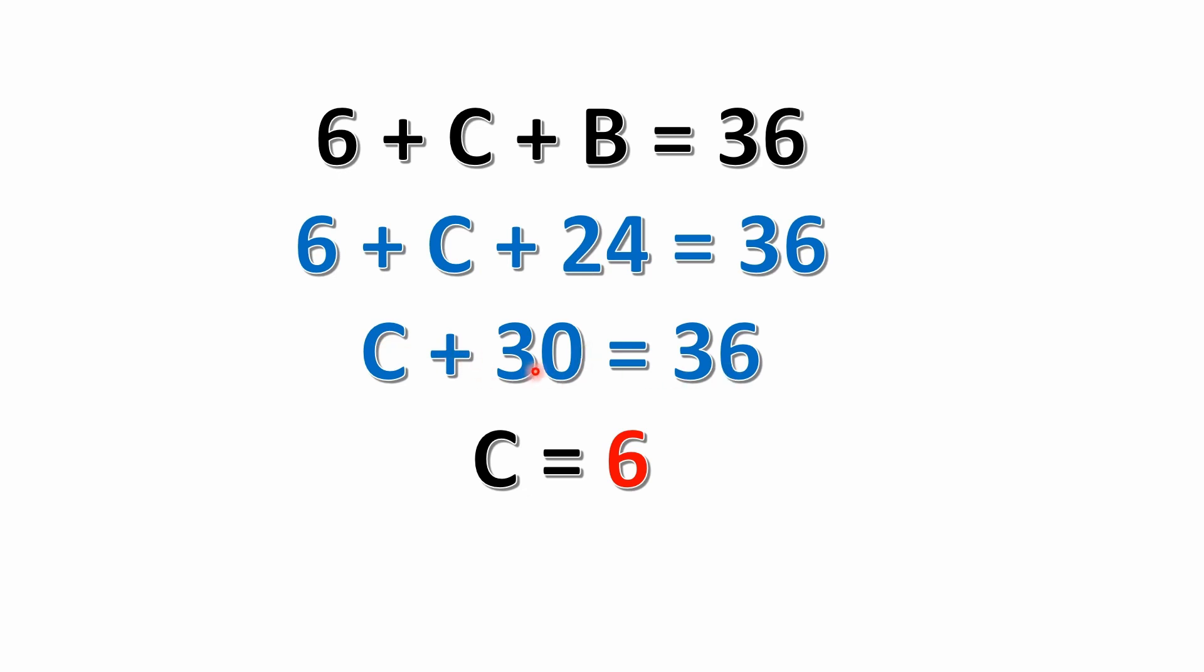Well, from here, you can just subtract 30 from both sides of the equation. You subtract 30 from the left, that goes away, left just with C. If you subtract 30 from the right side, you're going to be left with 6. So C equals 6.